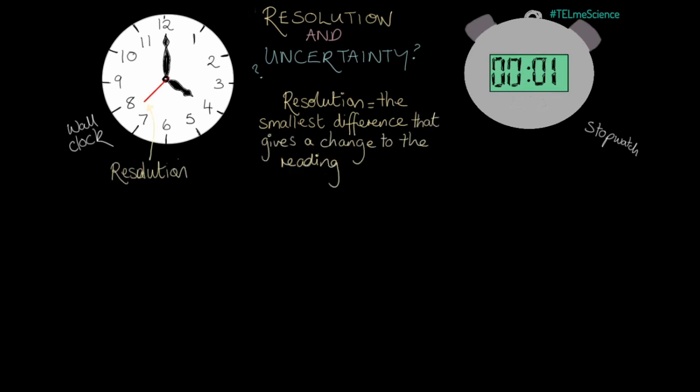With a wall clock, that will be seconds if it has a second hand. Milliseconds will not give a change in the clock's reading where the hands are.